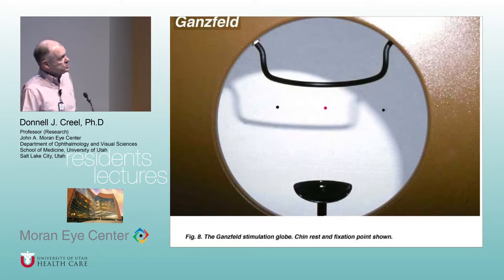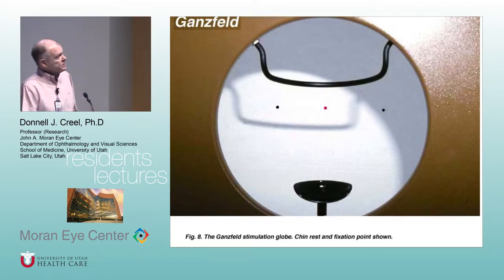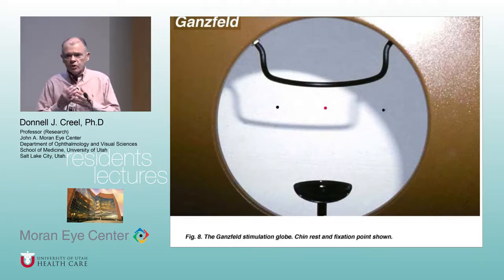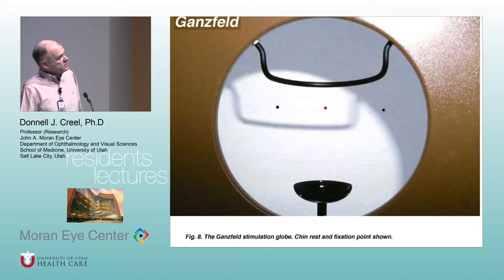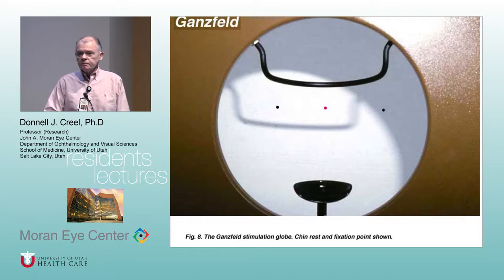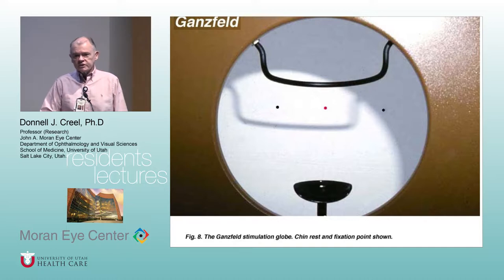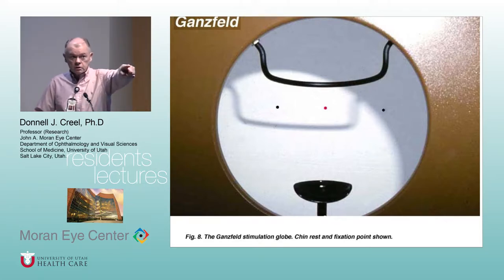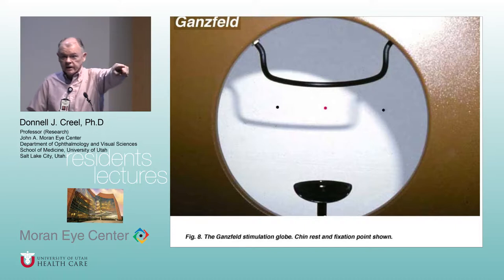Now, Gonsfelds are used. 'Gonsfeld' is a German word that means 'whole field.' It looks like a field machine, and you all know how much most patients like visual field testing. I've had patients come to my door and stop and say, 'No, no, I had that already — I'm not doing that again.'